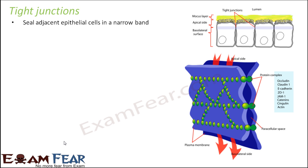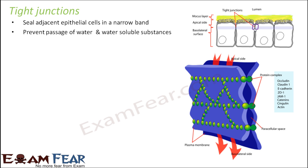Tight junctions, as the name suggests, seal two adjacent epithelial cells in a narrow band. In the picture, you can see where tight junctions are present — both walls of the two cells are completely sealed to each other. This prevents the passage of water and water-soluble substances.